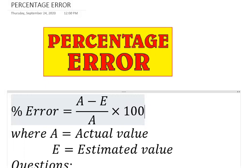So the percentage error we are able to get at the end of the day will determine how close or how far we are to the actual value. Now as you can see on the screen, we have a formula for percentage error. Percentage error equals A minus E, all over E, multiplied by 100.